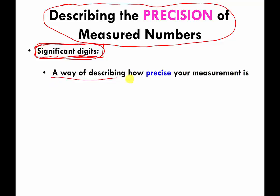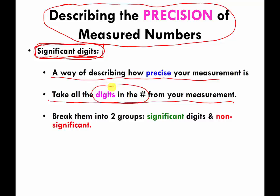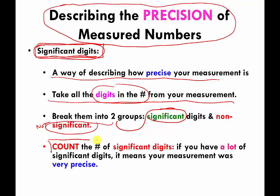Significant digits are a way of describing how precise a measurement is. You take all the digits in your number and break them into two groups: digits that are significant and digits that are not significant. Then you count the digits in the significant group. If a measurement has a lot of significant digits, it means the measurement was very precise compared to one with fewer significant digits. That's basically the punch line.